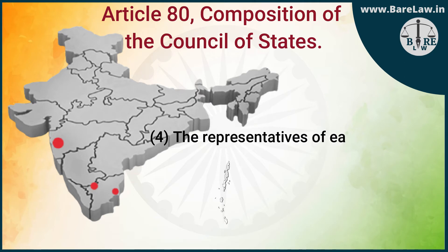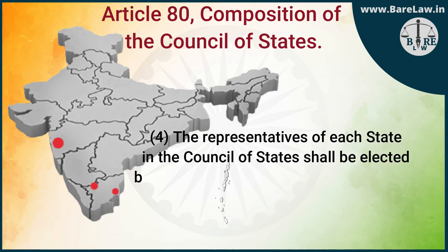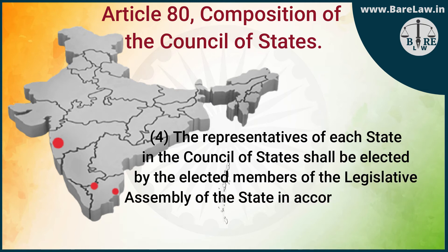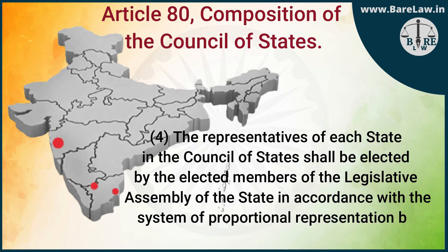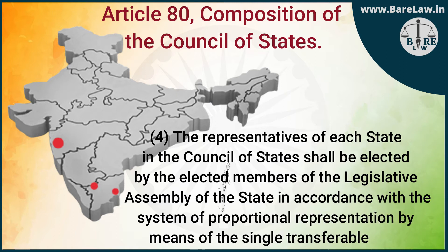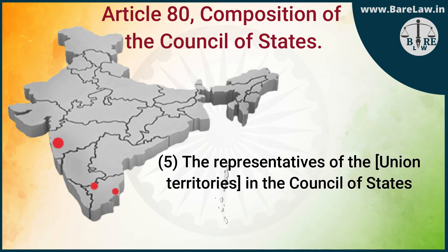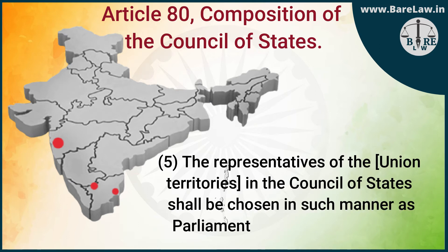Sub-Clause (4): The representatives of each State in the Council of States shall be elected by the elected members of the Legislative Assembly of the State in accordance with the system of proportional representation by means of the single transferable vote. Sub-Clause (5): The representatives of the Union Territories in the Council of States shall be chosen in such manner as Parliament may by law prescribe.